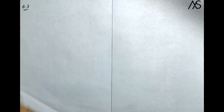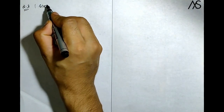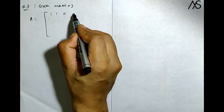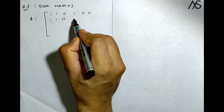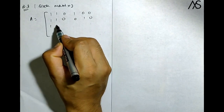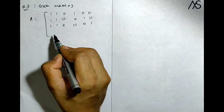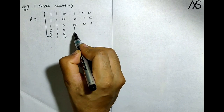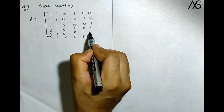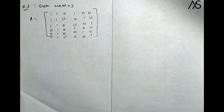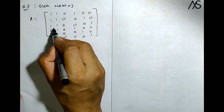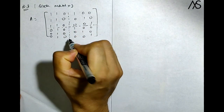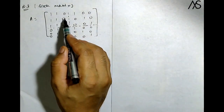Now finding the rank of a block matrix. Suppose A is a 6×6 matrix given as: row 1: [1,1,0,1,0,1], row 2: [0,1,0,0,0,1], row 3: [0,0,1,0,0,0], row 4: [1,0,0,0,1,0], row 5: [0,0,0,1,0,0], row 6: [0,0,0,0,1,0], and one more row [0,0,1,0,0,0,0,1]. This is a matrix of order 6×6. If we divide this block matrix by a line, we get different block matrices.